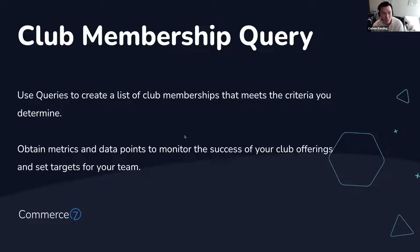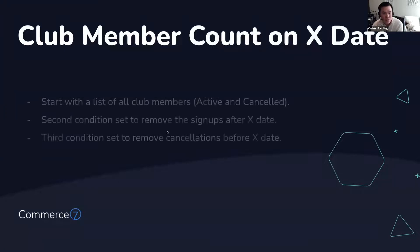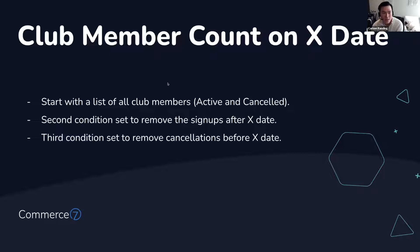So let's jump right to the first example. The first query I want to talk about is how do you determine what your club member count is on a specific date? This is a query that you can run to get a count, and you can use this count for a variety of different reasons and use cases. It's really good data to be able to know how to extract — what is your club membership count on a specific date in Commerce 7.